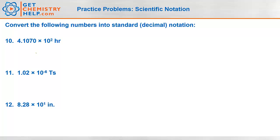A few more. 4.1070 times 10 to the second. So 41070. Those are all the significant digits. I'm going to move that decimal two places to the right. So from here two places. So boom boom like that. And the units are hours. So this has five significant figures and this still has five significant figures.